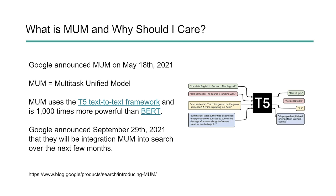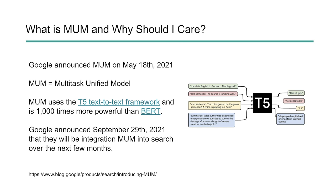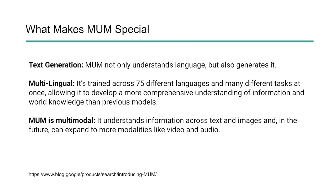Google announced on September 29th, 2021 that they'll be integrating MUM into Google Search over the next few months. So what makes MUM so special? The first thing is text generation. MUM not only understands language, but it can generate it. That's one of the areas where T5 was making massive advancements, and MUM is taking it even further. MUM can look at language, understand what it means, reply, give text answers, and generate text based on the inputs you've given it.